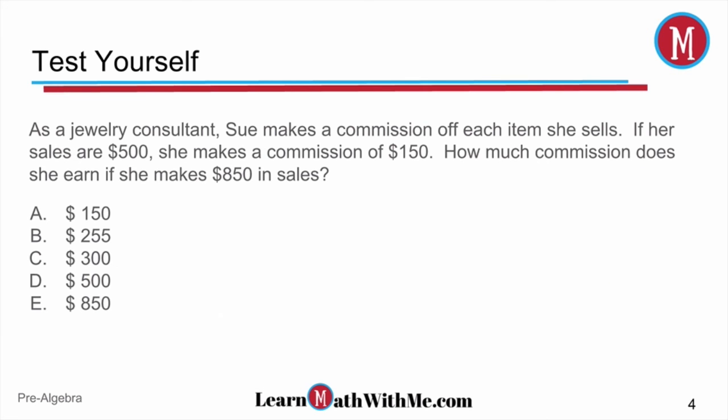Here's the test yourself question — give it a try and see if you get the correct answer. You should have gotten B, $255. As a jewelry consultant, Sue makes a commission off each item she sells. If her sales are $500, she makes a commission of $150. How much commission does she earn if she makes $850 in sales? There are several different ways you could work this problem. One way is to find the percent — her commission rate.